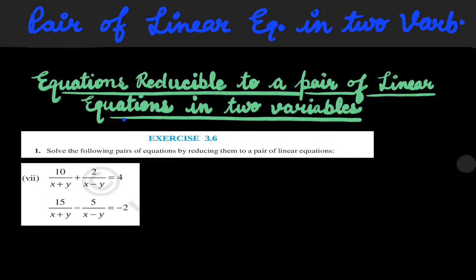Hello students, we will continue with the topic equations reducible to a pair of linear equations in two variables. The seventh and eighth parts are left; the rest we have already done. The seventh part is: 10 over (x plus y) plus 2 over (x minus y) is equal to 4, and 15 over (x plus y) minus 5 over (x minus y) is equal to minus 2. We will call these equation number 1 and equation number 2.